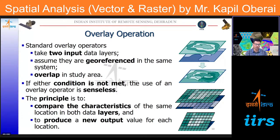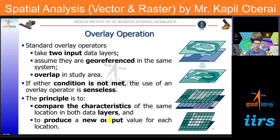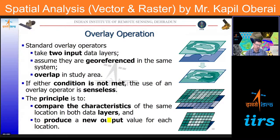Overlay means combining two or more layers. There are key conditions for performing an overlay operation: it requires at least two input layers (vector or raster); they must be in the same georeferenced coordinate system; and they must overlap in the study area. Performing overlays without meeting these conditions produces meaningless output. Basically, overlay compares the characteristics of the same location across both layers, and the output is a new layer created based on the operations performed.